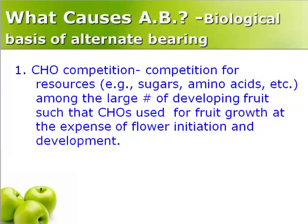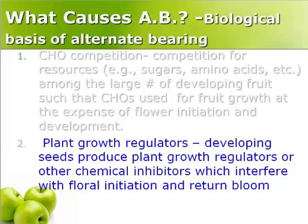Both plant growth regulators and carbohydrates are likely involved in alternate bearing. First, carbohydrate competition — there is a competition for resources such that carbohydrates are used for fruit growth at the expense of flower initiation and development. Another factor is plant growth regulators: the developing seeds produce plant growth regulators and/or other chemical inhibitors which interfere with floral initiation and return bloom.